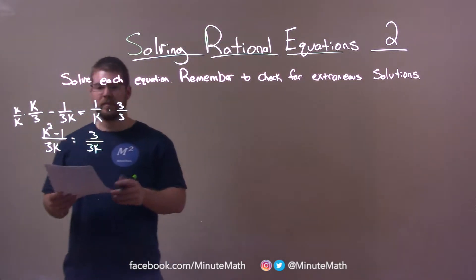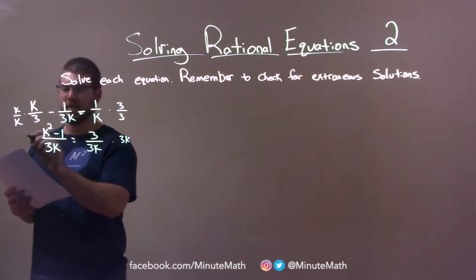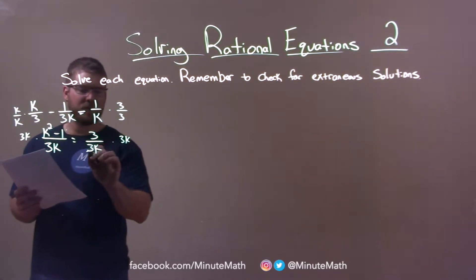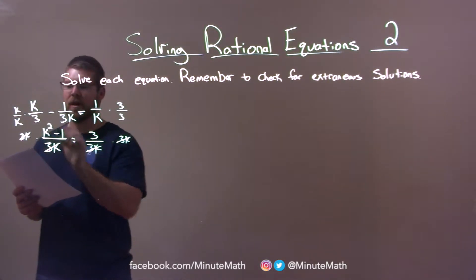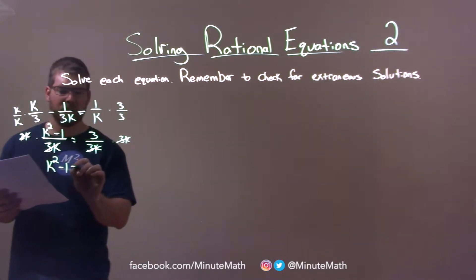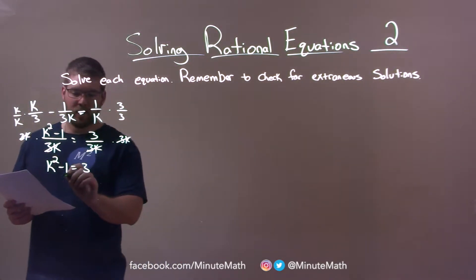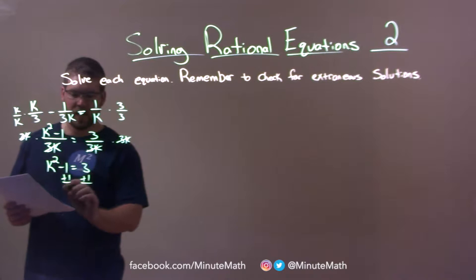Now, I'm going to multiply both sides by just this denominator, 3k, to cancel out the division, and look, it cancels out both sides. So, now we're left with k squared minus 1 equals 3. Well, this one's actually pretty easy. We add 1 to both sides, and we're left with k squared equals 4.